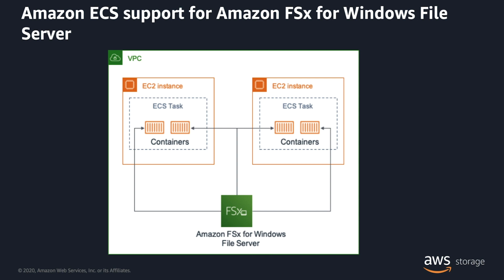This allows customers to deploy workloads that require access to shared storage, such as machine learning workloads, Windows apps such as SQL Server, IIS, and more. You can mount one or more Amazon FSx for Windows File Server file system volumes to an ECS container running on an ECS Windows instance. You can also share Amazon FSx for Windows File Server file system volumes between multiple ECS tasks and between multiple ECS containers within a single ECS task.